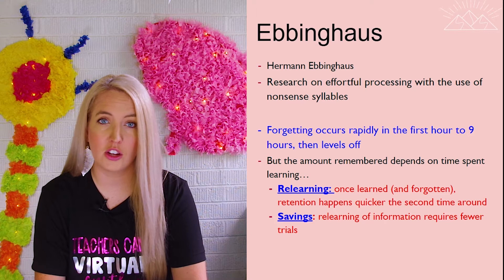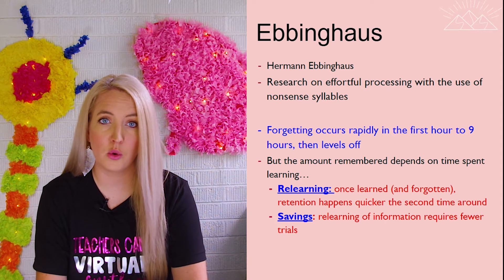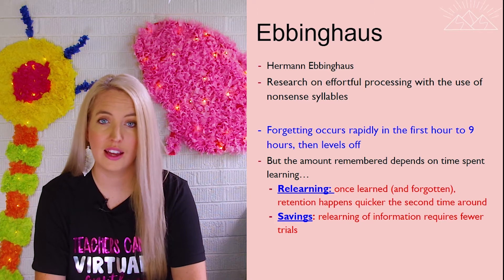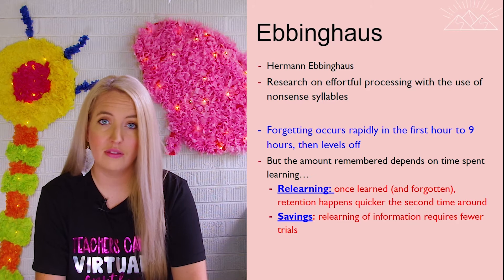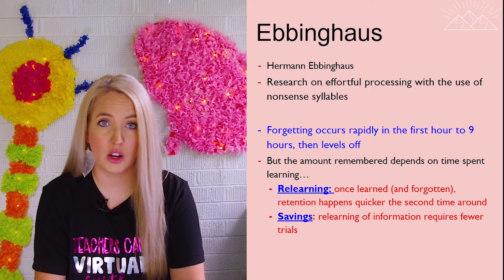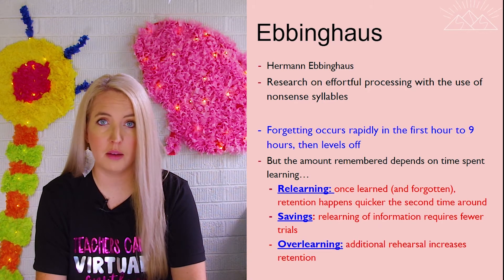The information is sort of saved in your memory — the imprint of the neural network is saved — so that the next time you revisit or try to bring that information back, the next time you relearn it, it's going to happen faster than it did initially. And as we talk about long-term potentiation, the more you continuously rehearse it — what we refer to as overlearning — the stronger that connection becomes, and that's going to increase retention.